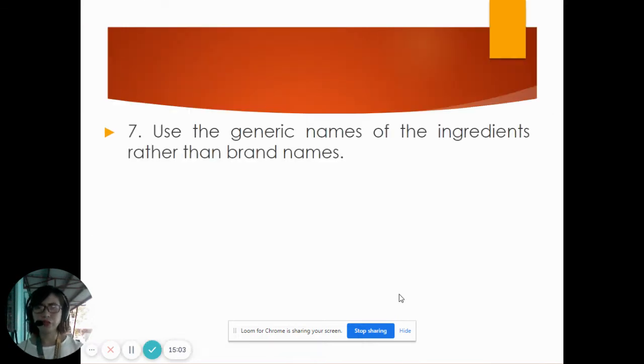Number seven: use the generic names of the ingredients rather than the brand names. For example, if you want to buy milk, you should specify the generic name, for example, condensed milk. Not say Alaska, because Alaska is a brand name for evaporated milk. You should use the generic names or terms only. Example, for milk, condensed milk, because there are many kinds of condensed milk. Never use the brand names like Alaska or so on.